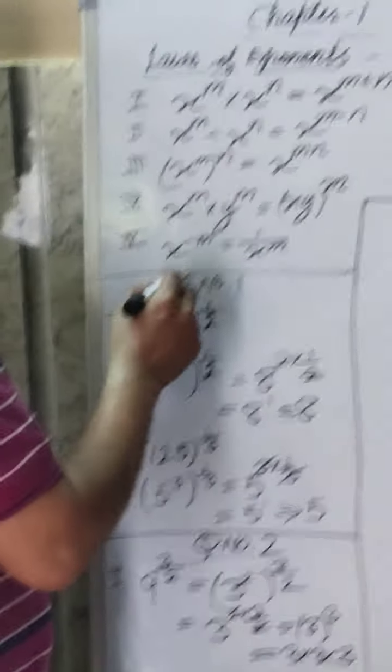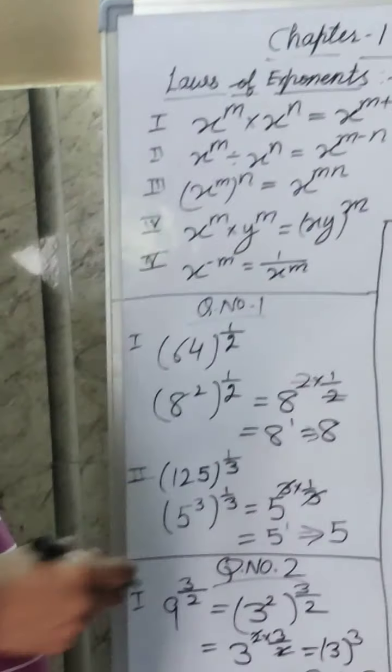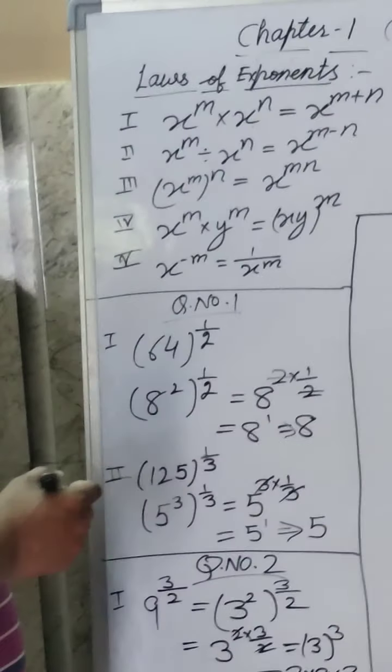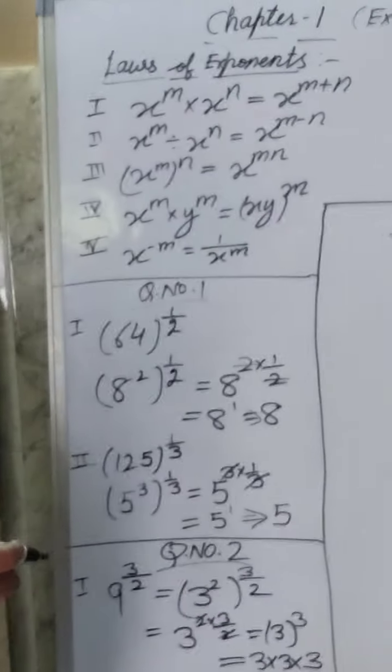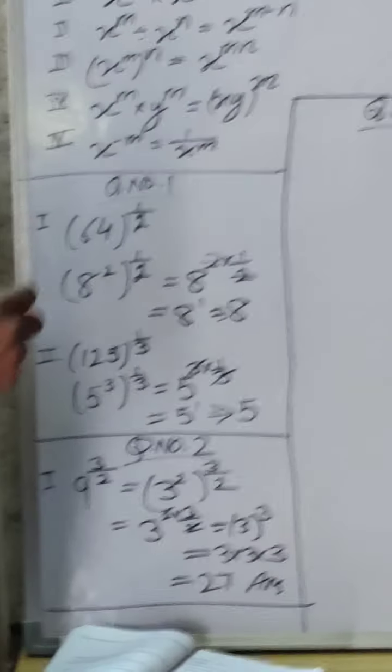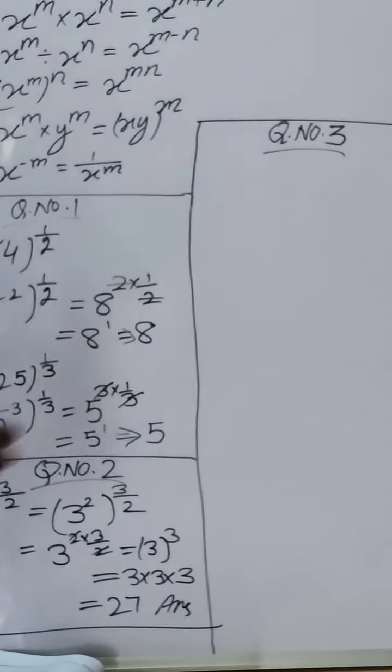x power minus m will be equal to 1 upon x power m. So now, in exercise 1.6, question number 1 you see, 3 parts are there. 2 I am solving, 3rd part you will try and tally the answer.